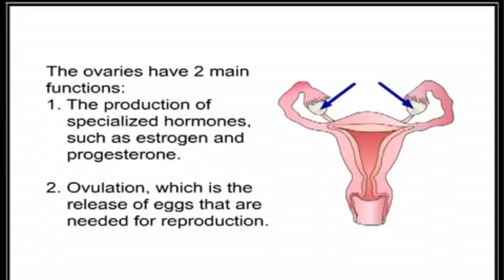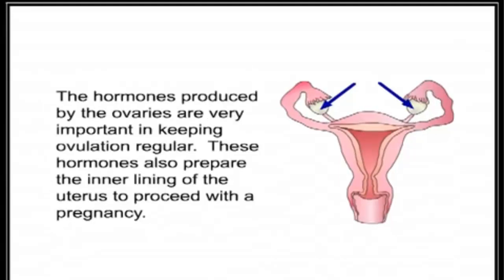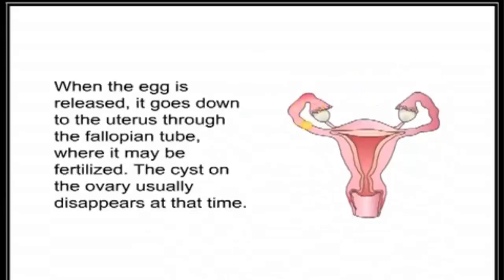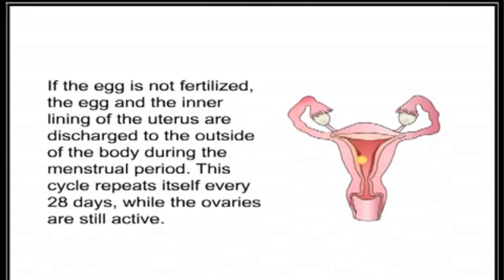The hormones produced by the ovaries are very important in keeping ovulation regular. These hormones also prepare the inner lining of the uterus to proceed with a pregnancy. Before the egg is released, a small cyst forms on the ovary. A cyst is a fluid-filled area. When the egg is released, it goes down to the uterus through the fallopian tube, where it may be fertilized. The cyst on the ovary usually disappears at that time.